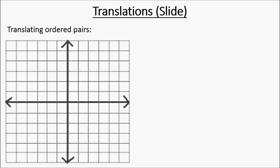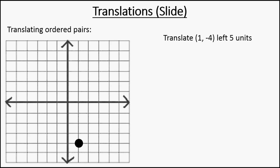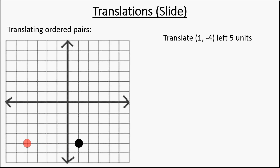So now we're going to try another one, translating ordered pairs. We're going to translate one, negative four and move it left five units. We need to figure out which axis is going to change — when you're moving something left or right, that's going to be dealing with the x-axis. First we'll try the old-fashioned way: draw the point one, negative four, and then slide it left five units. And there it is.